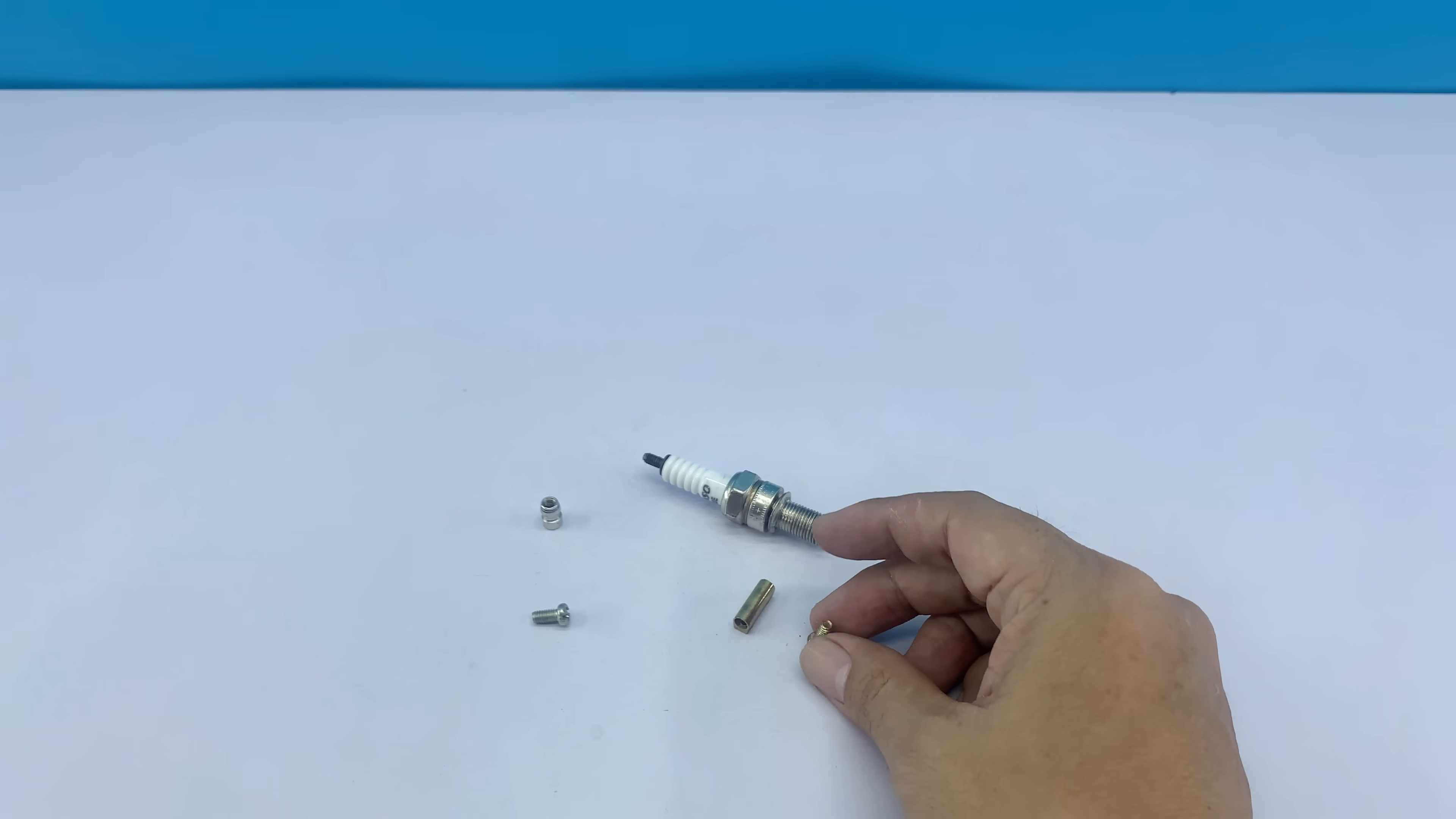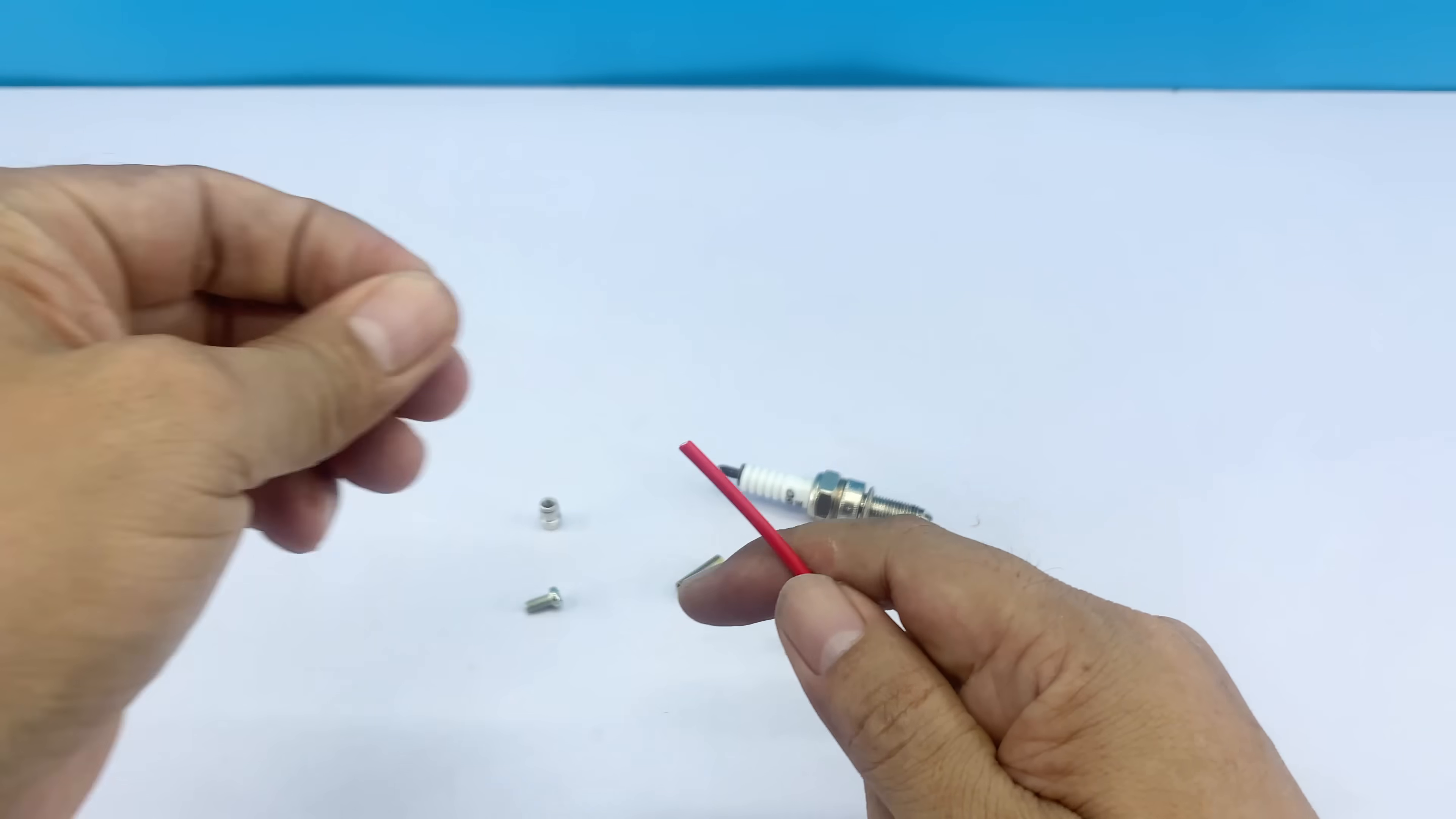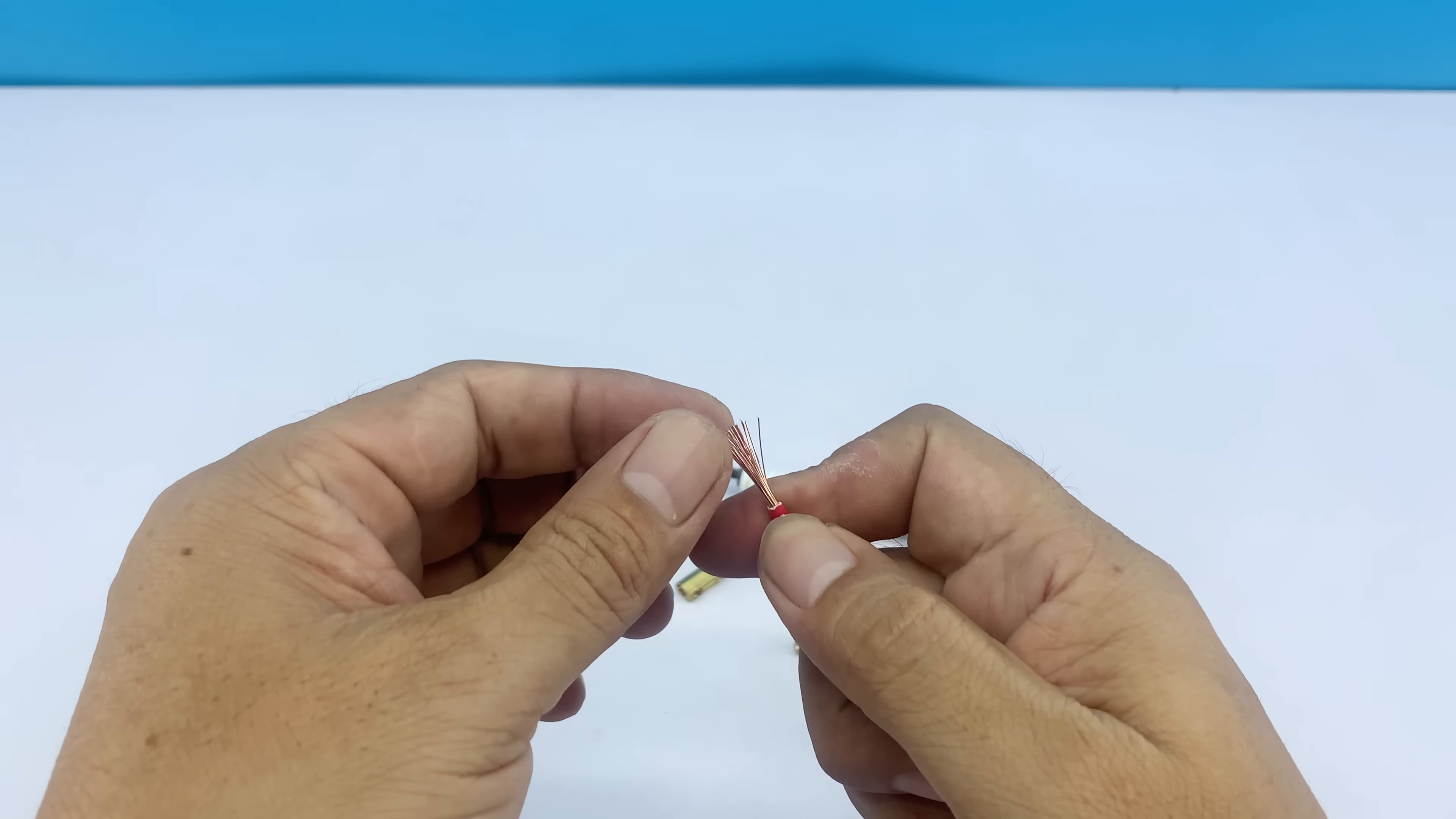And the purpose of the next step is to connect it, so it looks like this. At this step, I've prepared a short piece of wire. One end will be connected to the threaded tip, and the other end will be attached to the metal body of the spark plug.